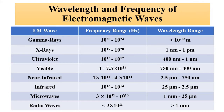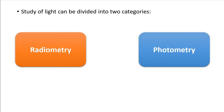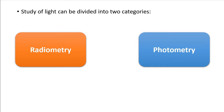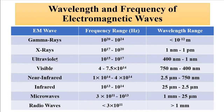The study of light is divided into two categories: radiometry and photometry. Radiometry is the study of light in any portion of the electromagnetic spectrum — any wavelength range, any frequency range. It does not matter. The total study of light is called radiometry.